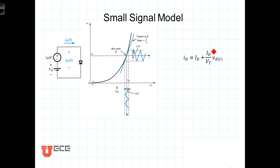Lowercase r, lowercase d, we're going to define as the ratio of the thermal voltage to I sub d, where I sub d is the DC bias current.